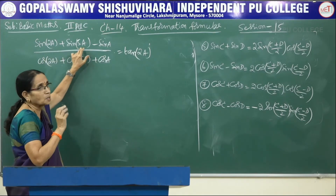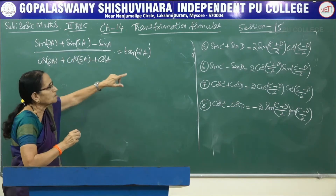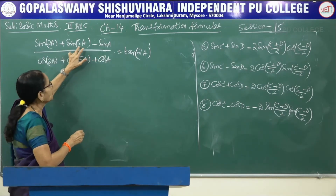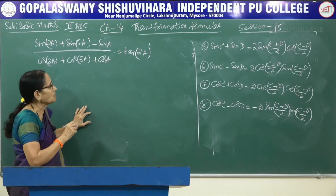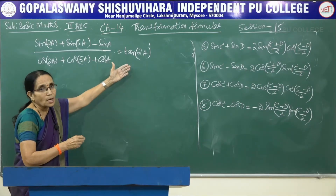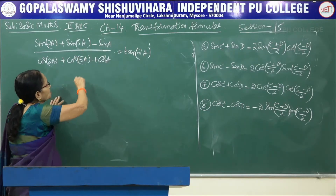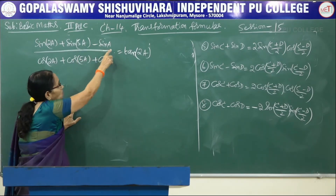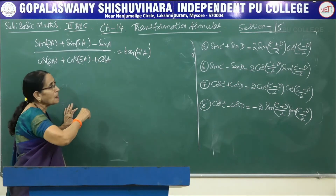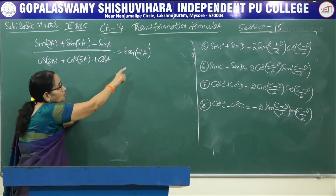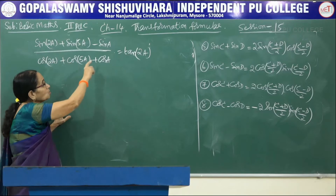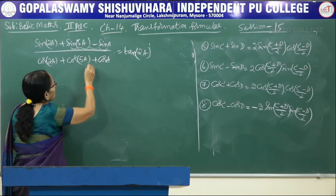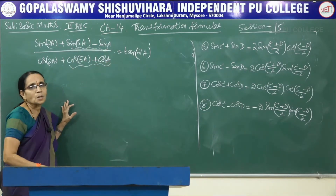There are three terms in both numerator and denominator. If we take sin 2A + sin 5A, C+D/2 gives 7A/2 — an odd number. Instead, take sin 5A and sin A: (5A + A)/2 = 3A, and (5A - A)/2 = 2A. We already need 2A, so this pair is advantageous. The same argument applies for the denominator terms.